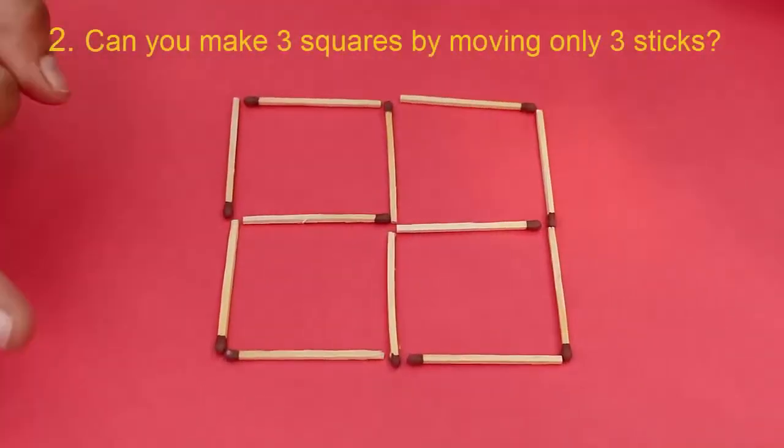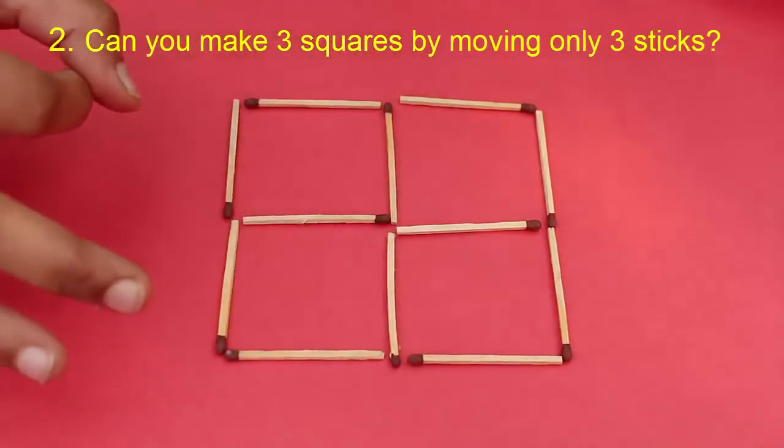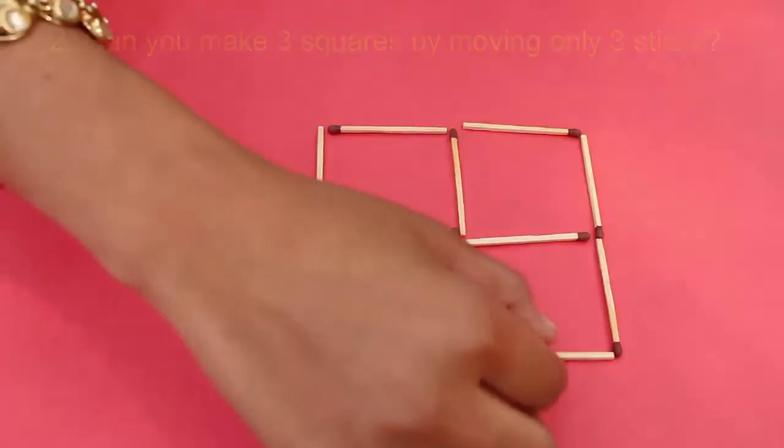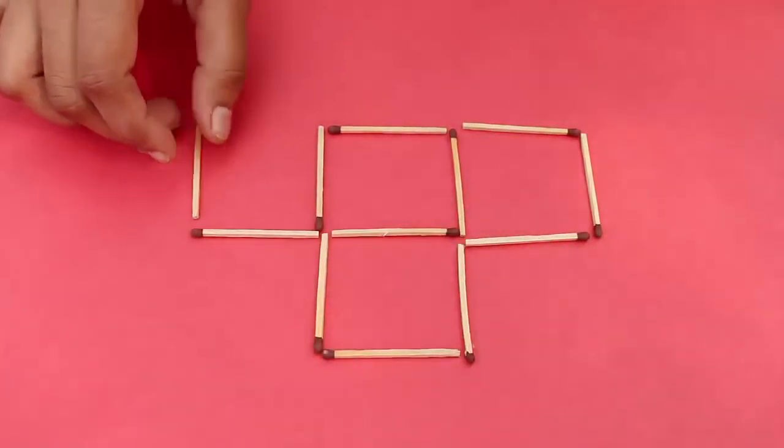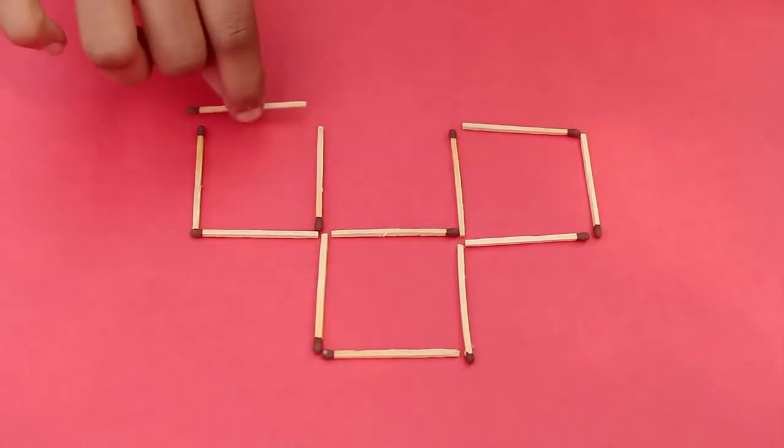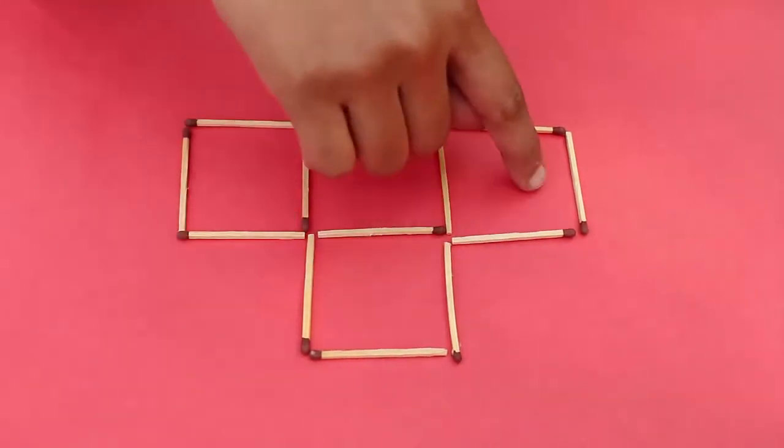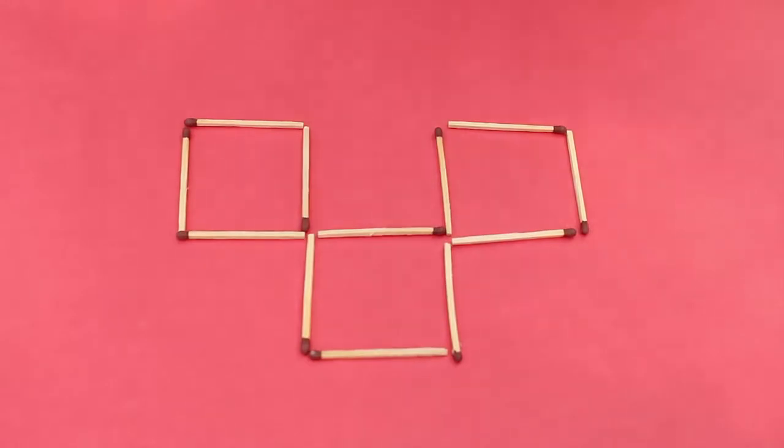Now let's try another puzzle. Can you make just three squares by removing only three sticks from these four squares? Remove the second one and the third one, and from four we just have three squares left.